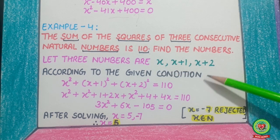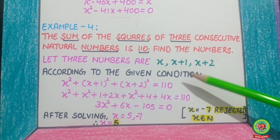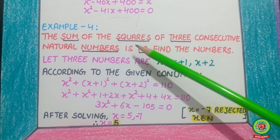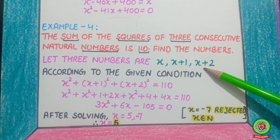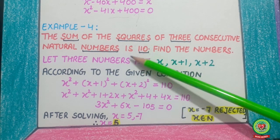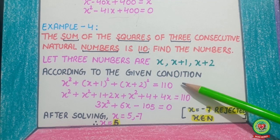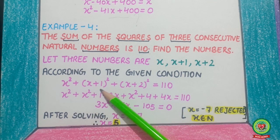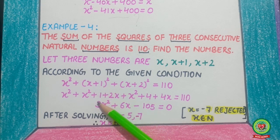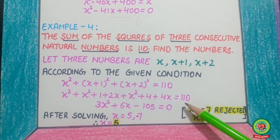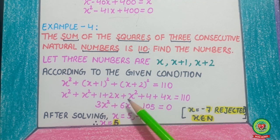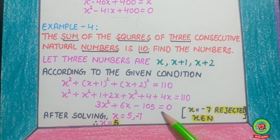According to the given condition, the sum of the squares: x squared plus (x plus 1) whole squared plus (x plus 2) whole squared equals 110. Applying the (a plus b) whole square formula: x squared plus (1 plus 2x) plus x squared plus (4 plus 4x) equals 110. After solving, the equation becomes 3x squared plus 6x minus 105 equals 0.